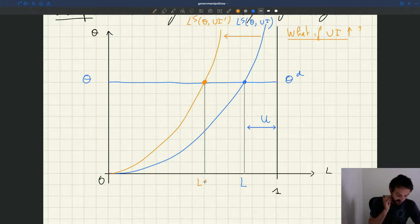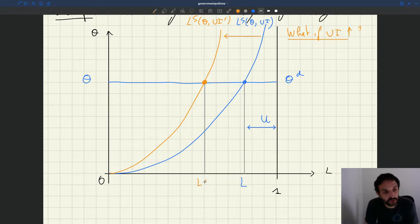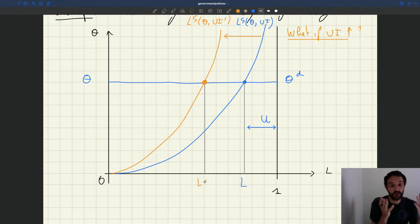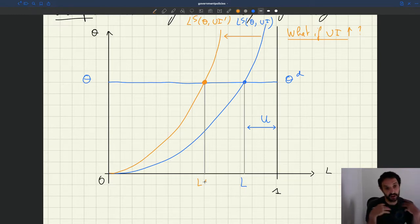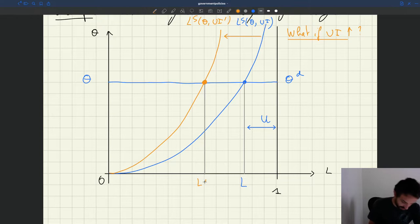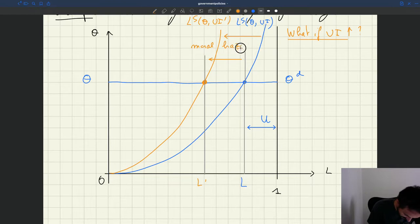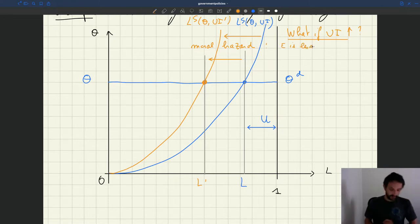And so what causes that reduction in employment? Well, it's what we had called earlier the moral hazard channel. It's because you change the UI program, the government cannot control how people search for jobs. So people just respond to incentives the best they can. You increase UI, search effort falls, and that's going to reduce employment. So there is only the moral hazard channel at play here. So here is just purely moral hazard. So moral hazard means that effort is less. That leads to the reduction in employment.